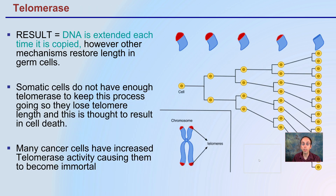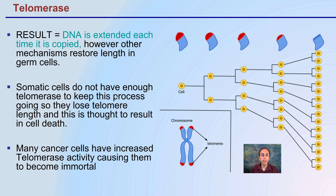The end result is that this DNA is extended each time it's copied. However, other mechanisms restore the length in germ cells. Somatic cells — your natural body cells — do not have enough telomerase to keep this process going, so they'll lose that telomere length. Germ cells, which are your sex cells, are different. The loss of telomere length in somatic cells is thought to result in that cell's natural death process.